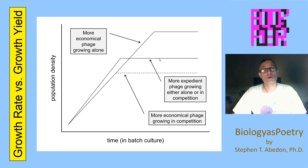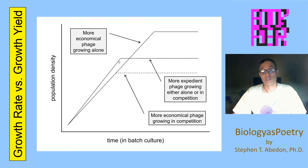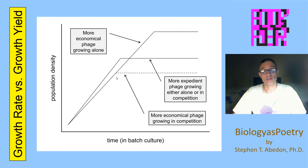This is what's going on when the two organisms are growing separately. When they grow together, however, the fact that the more expedient organism grows its population more quickly, reducing the amount of resources in the environment until there are none to sustain further growth, means that they can reach that point at a higher density than the more economical organism can.